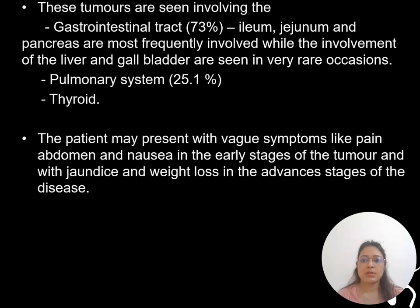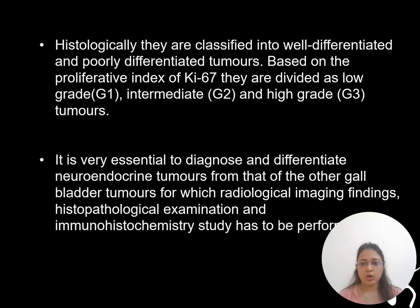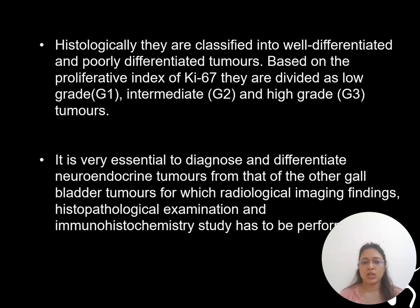Patients present with symptoms like pain, abdomen, and nausea in the early stages, and with jaundice and weight loss in the late stages. Histologically, it is graded into three categories — low grade, intermediate, and high grade — on the basis of the proliferative index KI67. Therefore, it is very essential to diagnose and differentiate gallbladder neuroendocrine tumors from other gallbladder tumors, which can only be done by correlating radiological imaging findings with histopathology and immunohistochemistry studies.